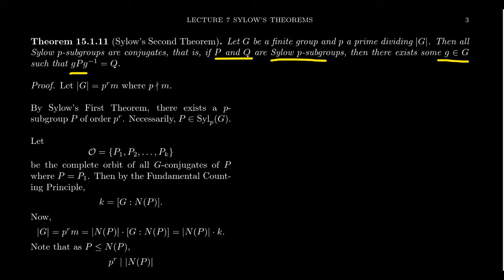Before proving this, I want to make some statements. If this is true — which it is, by Sylow's second theorem — all Sylow P subgroups are conjugates of each other. And as conjugation is an inner automorphism on G, conjugation induces a group isomorphism between Sylow P subgroups. In particular, you're going to get that P and Q are isomorphic to each other — they're the same group structure, just different elements.